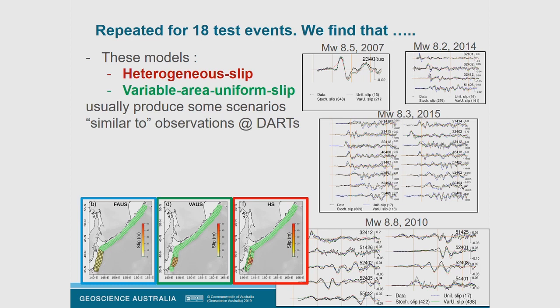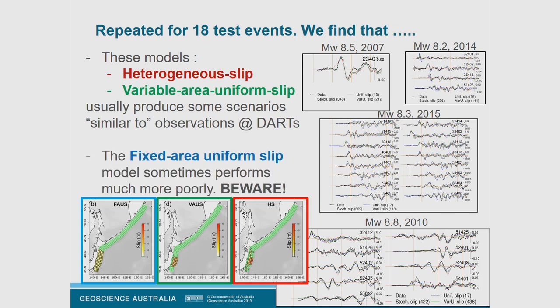Repeating this for 18 different test events: the heterogeneous slip model and the variable area uniform slip model perform about equally well in terms of producing scenarios similar to deep-ocean observations. However, the fixed area uniform slip model sometimes works well but sometimes is terrible. So I would be very cautious about using those kinds of scenarios for tsunami hazard work — you could get it very wrong.